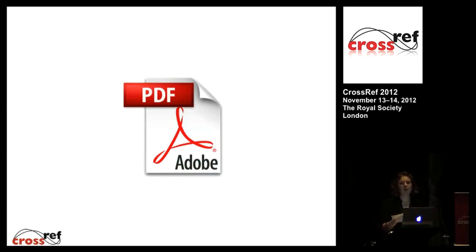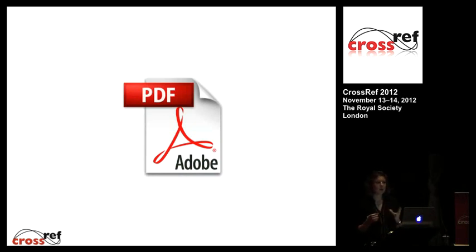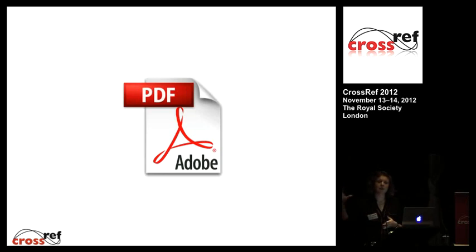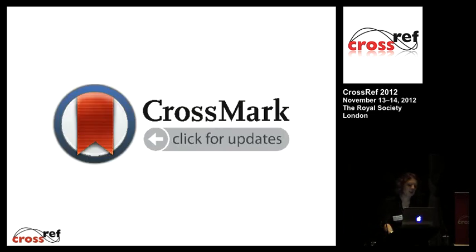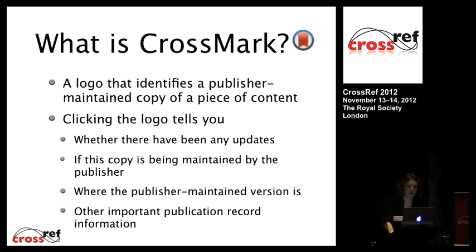Publishers have said: if something gets retracted we'll update the PDF, put a notice on it, put a big retracted stamp across it — and that's fine if you access the PDF after retraction for the first time. But it's those old, dusty copies saved somewhere else that can cause an issue. These are all problems that we're looking to address with Crossmark.